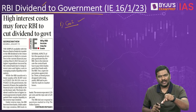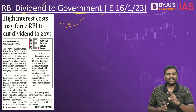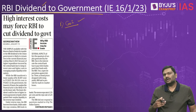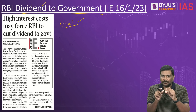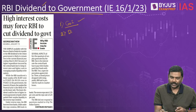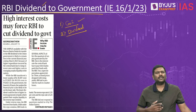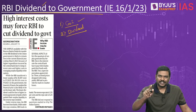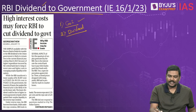RBI was nationalised by the government in 1949 and since then the ownership of RBI is with Government of India. Second important point: whenever companies — including RBI — earn profit, part of the profit is given to the owner of the companies. Whenever part of the profits are distributed or given to the owners, that is called dividend.